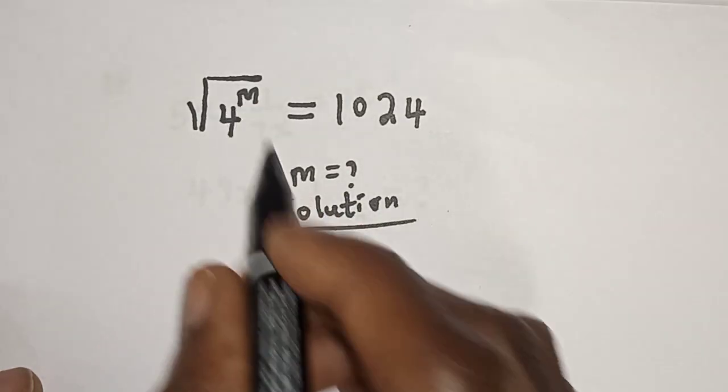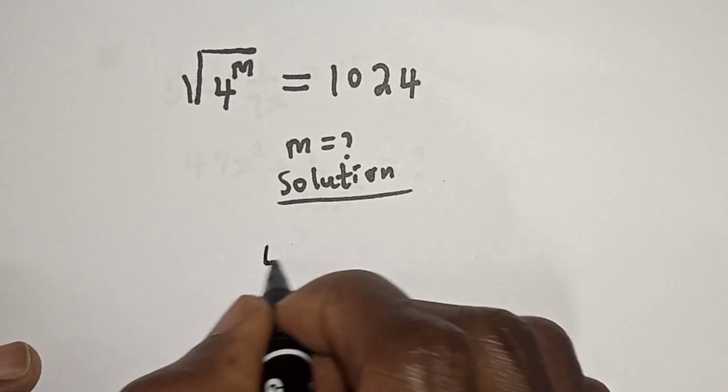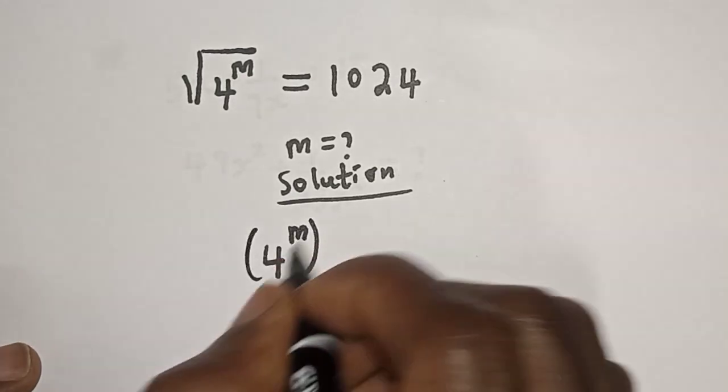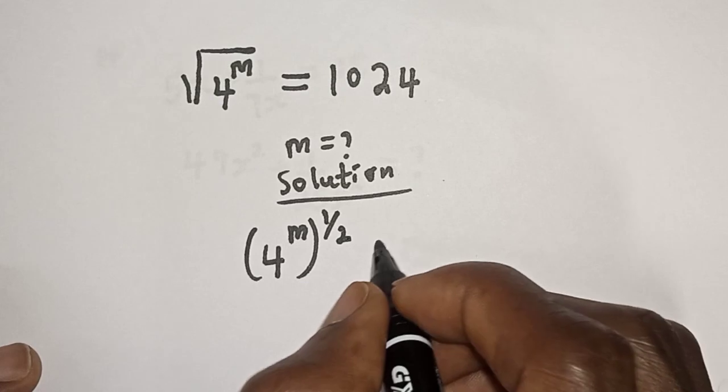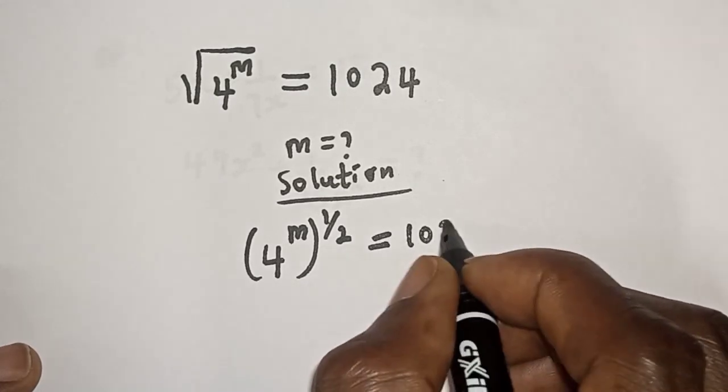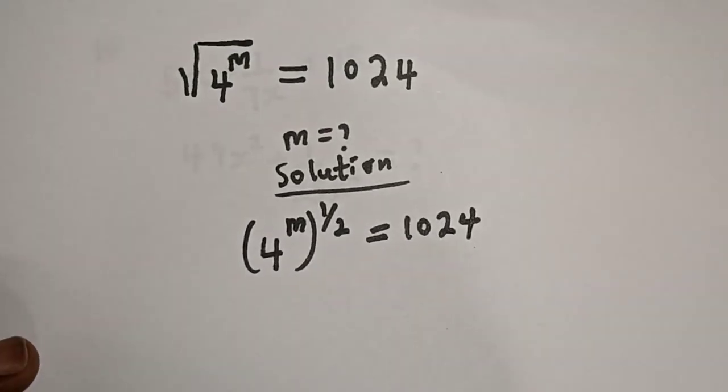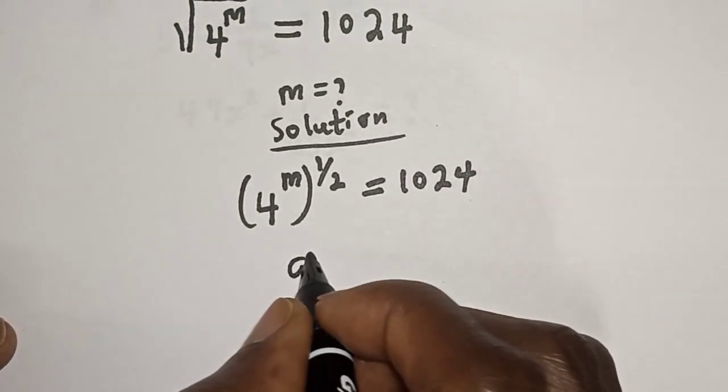Solution. Square root of four to power m can be written as four raised to power m to the power of one over two is equal to 1024. Then take note of this rule: if you have a raised to power n to the power of m...